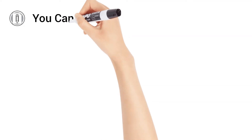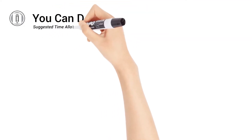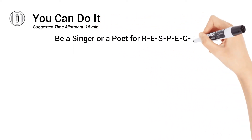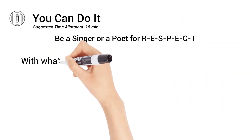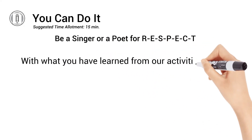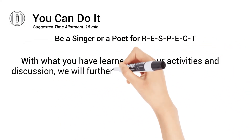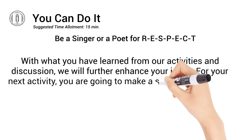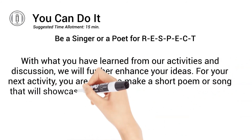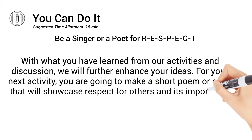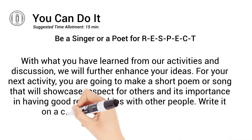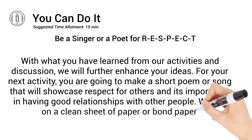You can do it! Suggested time allotment: 15 minutes. Be a singer or a poet for RESPECT. With what you have learned from our activities and discussion, we will further enhance your ideas. For your next activity, you are going to make a short poem or song that will showcase respect for others and its importance in having good relationships with other people. Write it on a clean sheet of paper or bond paper.